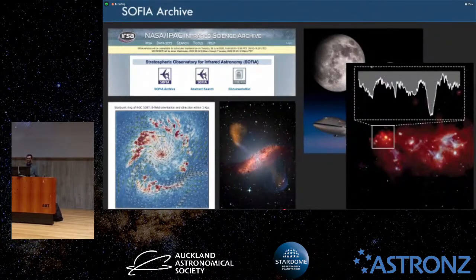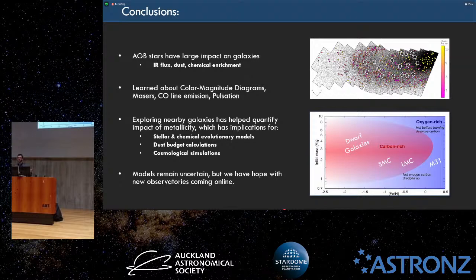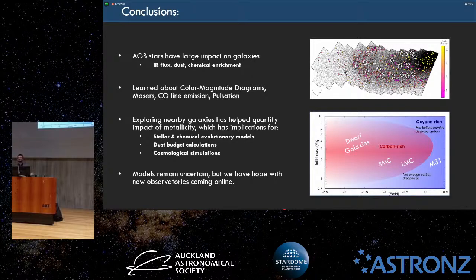My time is about up. The main takeaways are that AGB stars are an important phase of evolution that most stars will go through, including the sun. They're very complicated and have a large contribution back to the universe. With upcoming telescopes like James Webb, we're going to learn a lot more. There's going to be a big release of James Webb Space Telescope images in a couple of days, and it's a perfect telescope to observe AGB stars with.